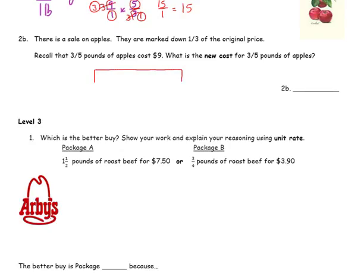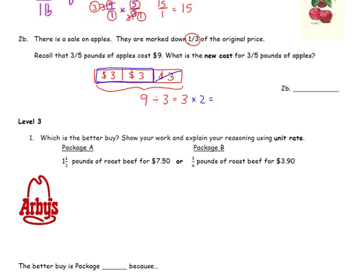This bar represents the apples that we are buying, and the cost of this is originally $9. It's marked down a third of the price. So we need to figure out what a third of the price is: nine divided by three equals three, and that means each third costs $3. Since it's being marked down a third, we will not have to pay for one of the thirds. So $6 — three times two is $6 — that will be our cost when they are on sale.